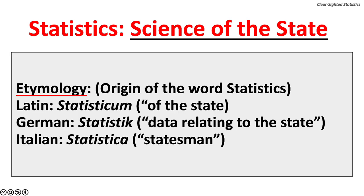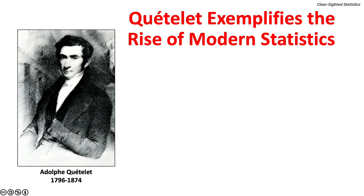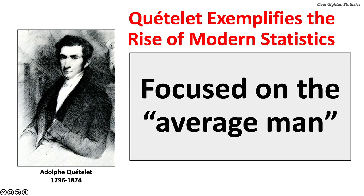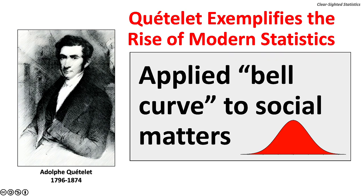The origin of the word statistics — its etymology — is the state. In Latin, statisticum means 'of the state'; in German, statistic means 'data relating to the state'; and in Italian, statistica means 'statesman.' The Belgian astronomer and proto-sociologist Adolf Quetelet exemplifies the rise of modern statistics. He was among the first to use statistics to study social phenomena, calling this discipline social physics, and his research focused on what he called the average man.